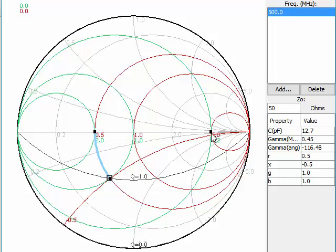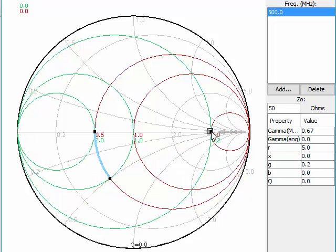The other termination is 250 ohms. 250 divided by 50 gives us 5 ohms normalized. So that would be this point over here at 5. We want to go from this termination over to this termination.